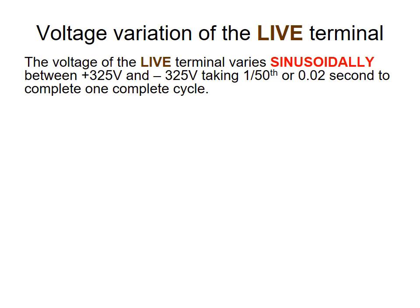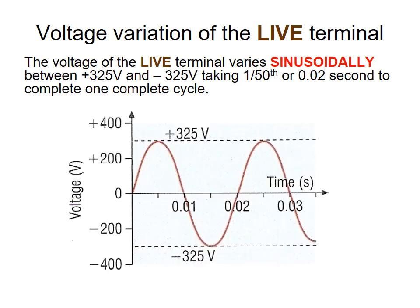There's voltage variation at the live terminal. The voltage — the amount of energy being transferred by the charge at the live terminal — varies sinusoidally between 325 and negative 325 volts, taking a fiftieth of a second, or 0.02 seconds, to complete one cycle. Here's a graph showing it going from zero down to negative 325, then up to plus 325, back down to zero.